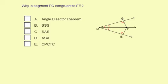The angle bisector theorem says if a point is on the bisector of an angle, then it is equidistant from the two sides of the angle, and equidistant means the same distance, so that means that segment FG and segment FE are congruent. So your answer is the angle bisector theorem.